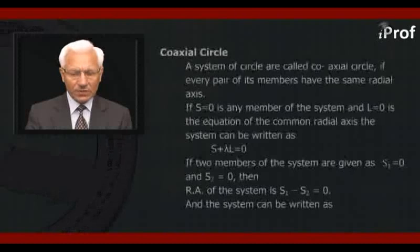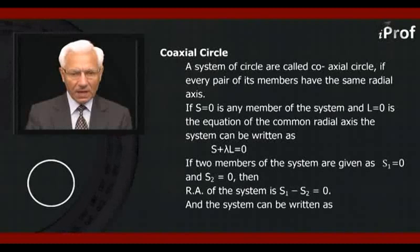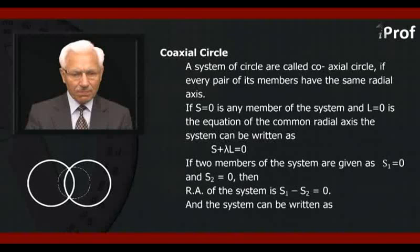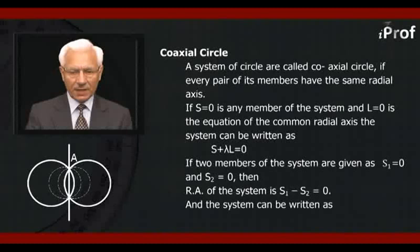Next, we define coaxial circles. A system of circles is called coaxial if every pair of its members has the same radical axis. If s = 0 is any member of the system and l = 0 is the equation of the common radical axis, then the system can be written as s + λl = 0, where λ is a parameter. For different values of λ, we get different members of the system.